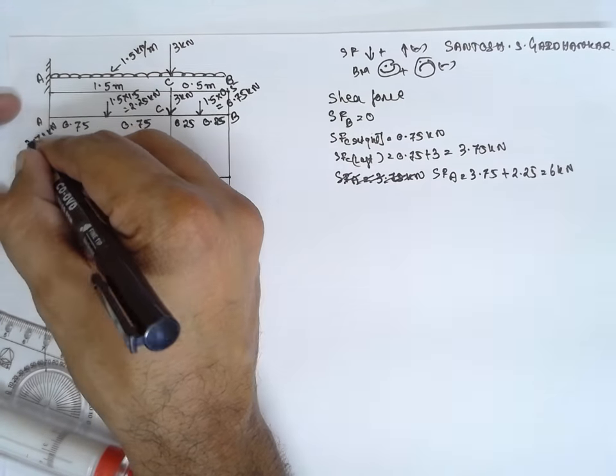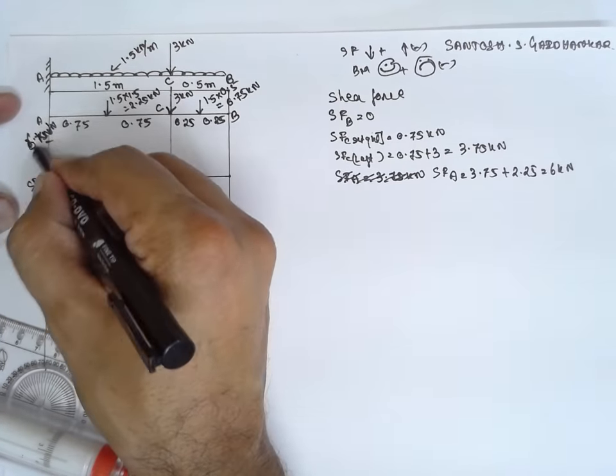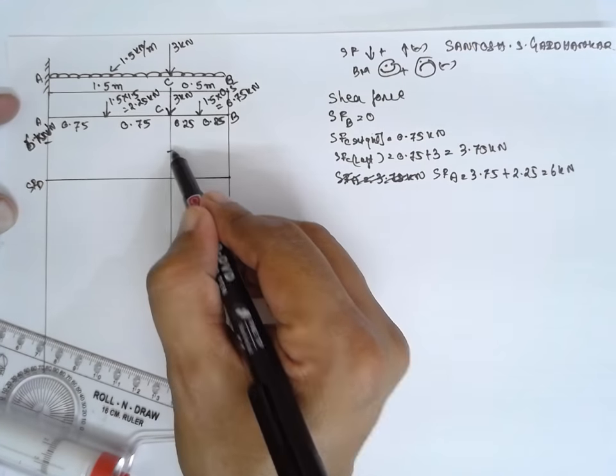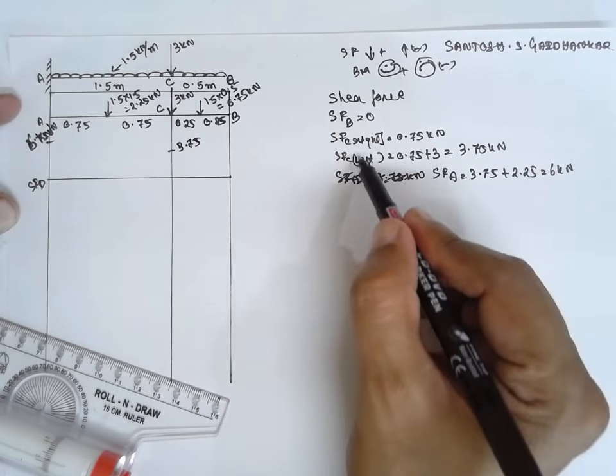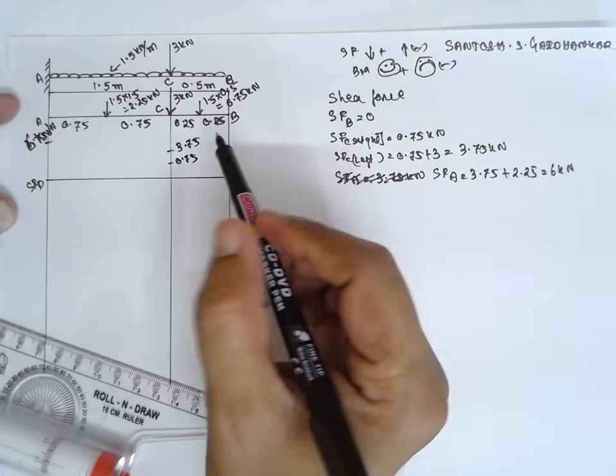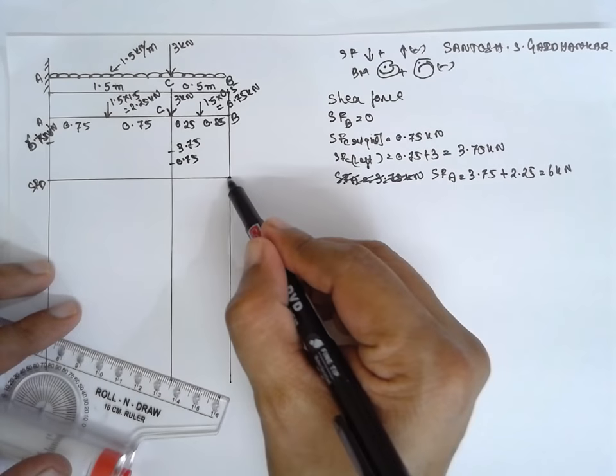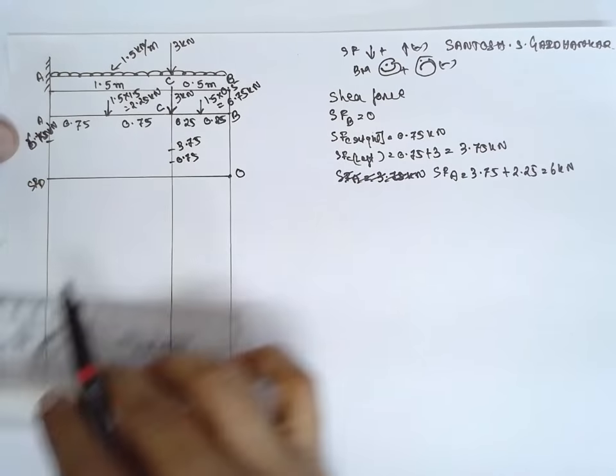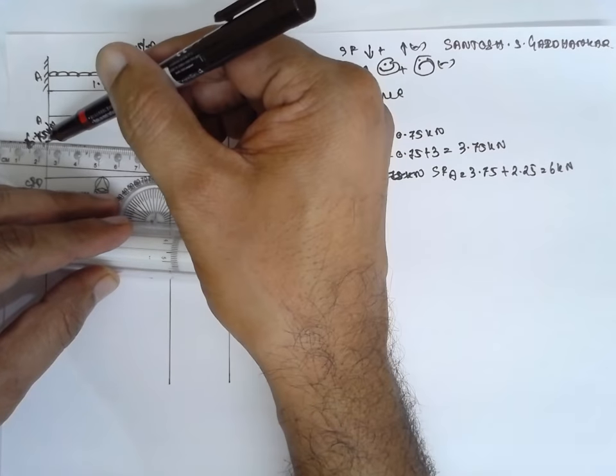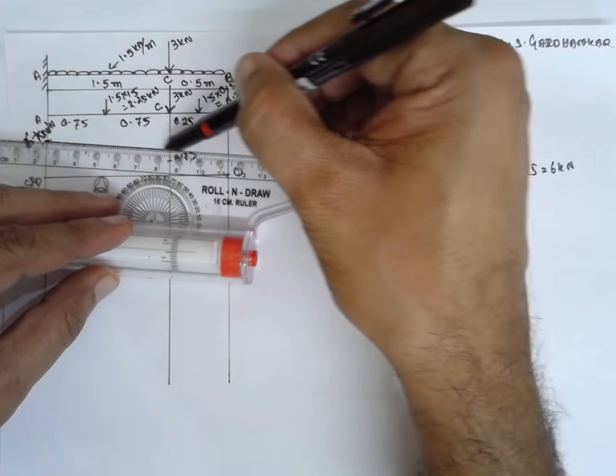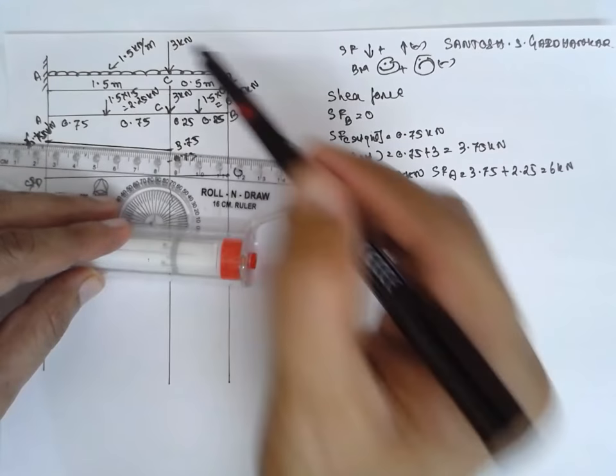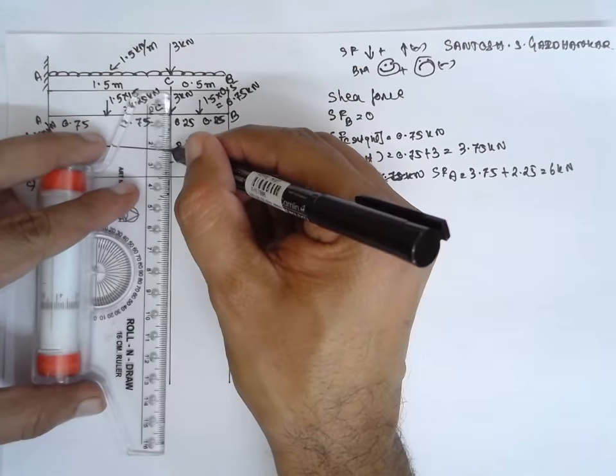The first value is 6 kilonewton. SF at C is 3.75. At C, one more value is there, 0.75. At B, it is 0. Therefore, it is an inclined line here. Why it is inclined line? Because it is a UDL. It is a UDL, therefore the inclined line will appear.